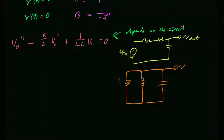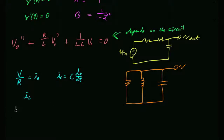For the parallel RLC: the current through the resistor is v/R, the current through the capacitor is C·dv/dt, and there's also a current through the inductor — they must all sum to zero by KCL. The inductor equation is v = L·di/dt.